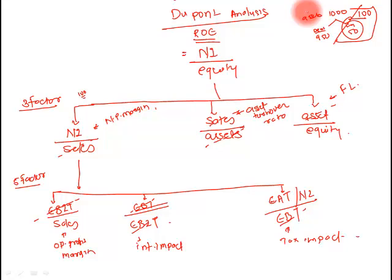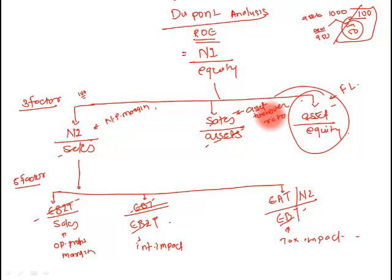To summarize: ROE can be enhanced by increasing profitability, increasing sales, or increasing leverage — and your ROE would automatically be enhanced. This completes the five-factor DuPont analysis. Are you clear that if you take a loan, it helps increase your ROE?